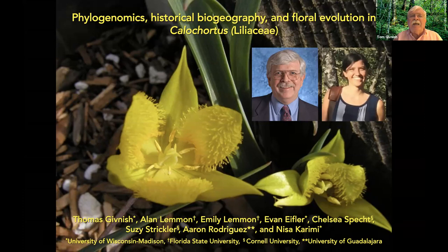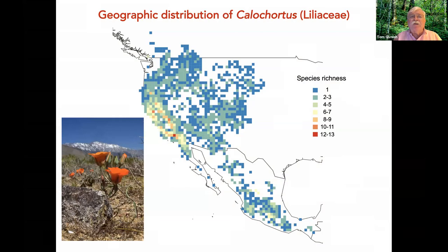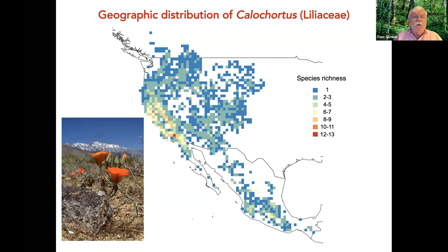Calochortus includes 72 species of bulbous herbs with flowers of kaleidoscopic variety and exquisite beauty. It has a center of diversity in California and ranges north to British Columbia, west to the Dakotas, and south to Mexico. Calochortus has undergone striking radiations in flower form, in habitat, and in substrate preferences.